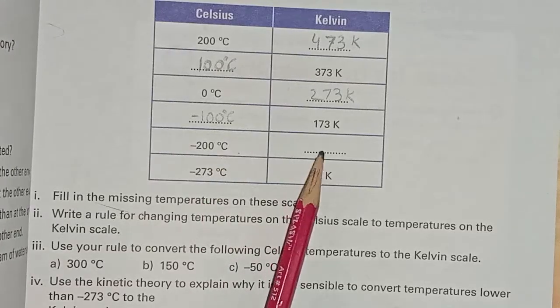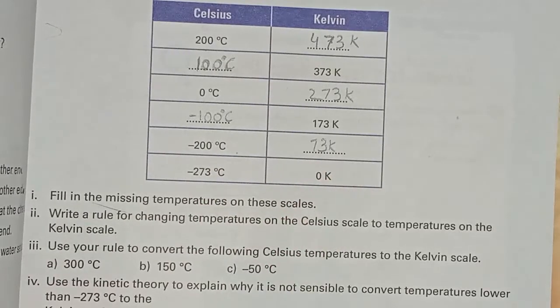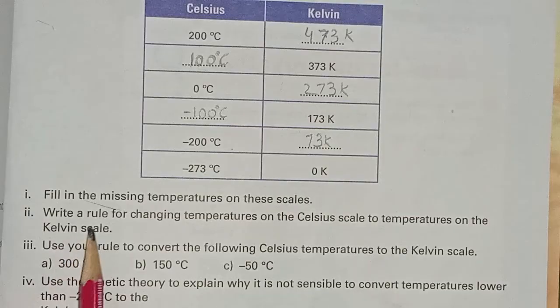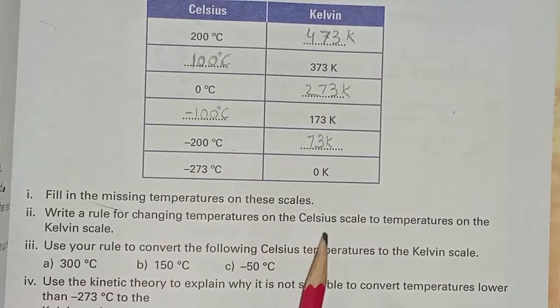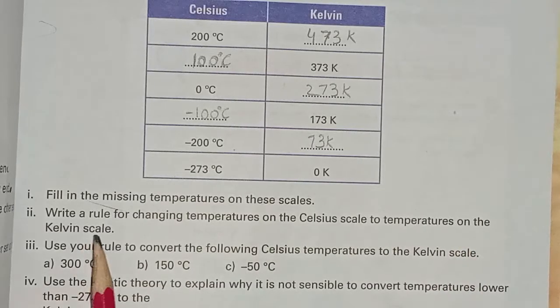Then we write minus 200 degrees Celsius and 73 Kelvin. Next question: write the rule for changing temperatures on the Celsius scale to temperatures on the Kelvin scale.